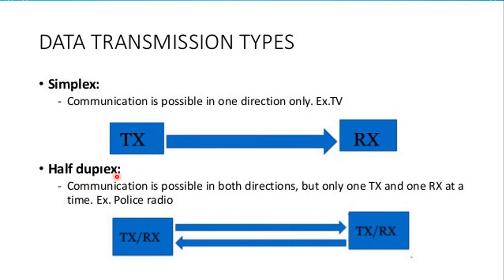In half-duplex mode, data is transmitted one way at a time, which is known as half-duplex communication. There is a transmitter and a receiver with two lines between them. The first line indicates data transmission from transmitter to receiver, and the second line carries data from receiver to transmitter. Communication is possible in both directions, but only one transmit and one receive at a time. An example is a walkie-talkie.